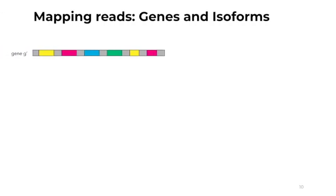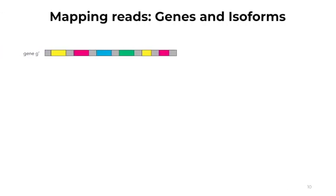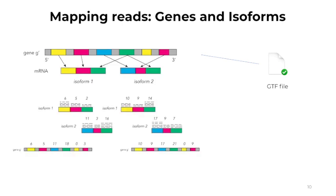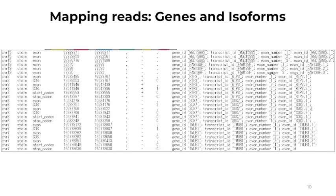To process next-generation sequencing data, we must first map reads onto the reference genome. To do so, we have to know where on the genome we have exons — this information is in the GTF file. Then we can take sequences from the FASTQ file where we have short reads to align to an annotated position on the genome. The genome reference gives us information on where the gene is located and what exons are on that gene. As different isoforms are created from this single gene reference, different reads are mapped onto specific exons. As you can see from this GTF file example, on chromosome 15 we have an exon that starts and ends at a specific place, and belongs to a given gene and transcript ID.